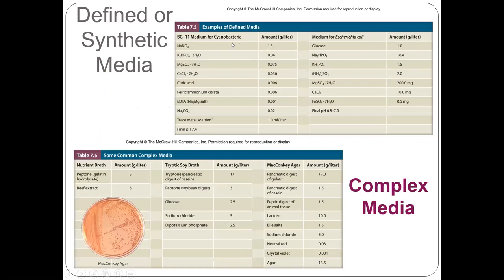This is an example — BG11 medium for cyanobacteria and this medium for E. coli. Table 7.5 shows defined media where all chemicals are well defined. But when you see MacConkey agar, nutrient broth, and tryptic soy broth, these are complex media because some chemicals are not well defined — for example, tryptone, peptone, and beef extract. Those are not well defined, so although they are listed as ingredients, they are not chemically defined. That is called complex media.